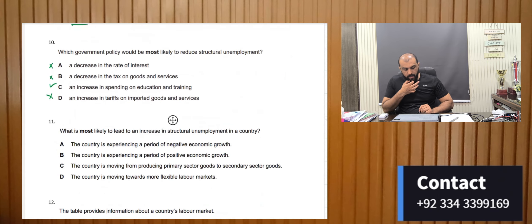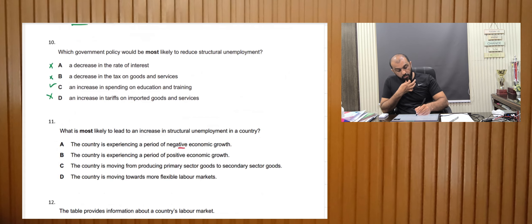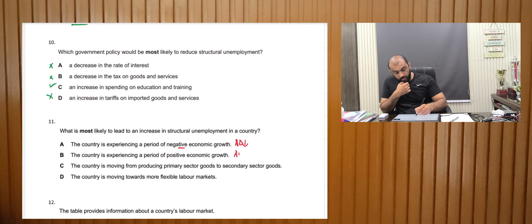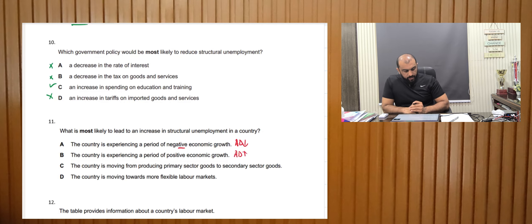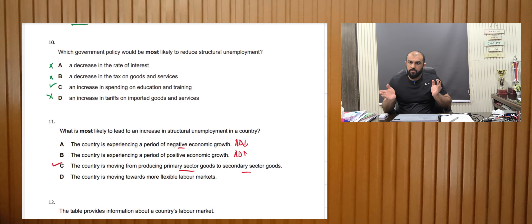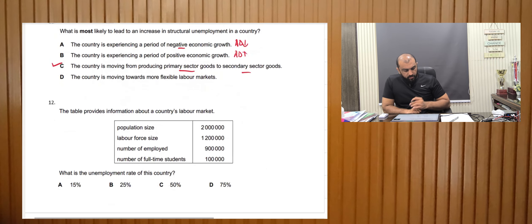What is most likely to lead to structural unemployment in a country? Negative economic growth means falling aggregate demand — that is cyclical unemployment. Positive economic growth is also cyclical. The correct answer is C: a country moving from producing in the primary sector to the secondary sector, because moving from primary to secondary and secondary to tertiary is known as structural change, which causes structural unemployment.